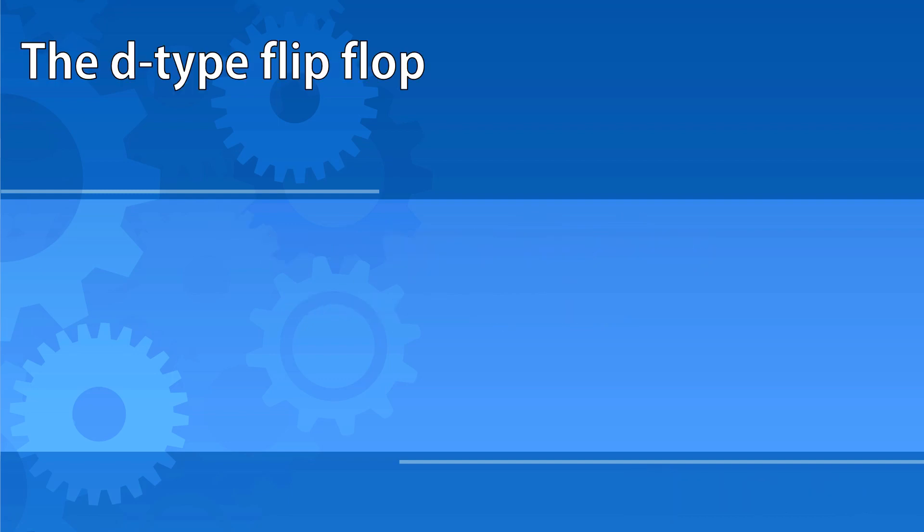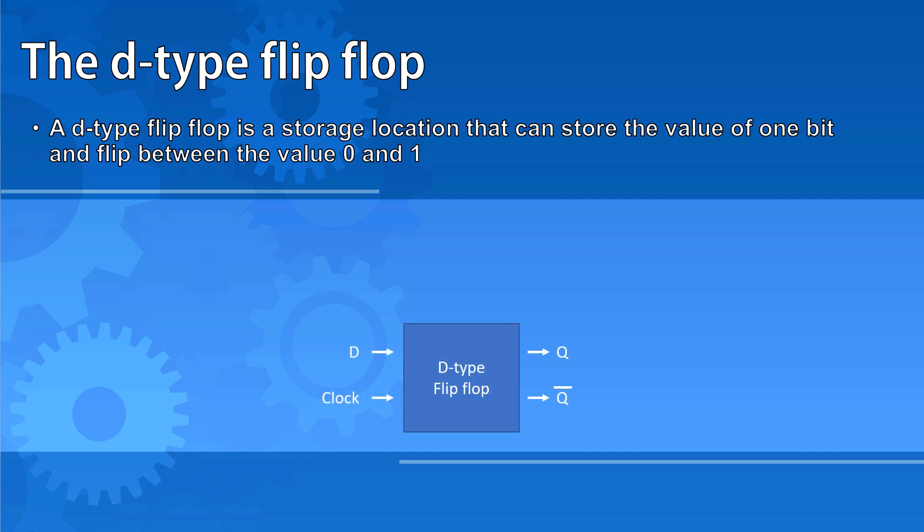A D-type flip-flop is a storage location that can store the value of one bit and flip between the value of 0 and 1. D-type flip-flops are combined together to create RAM and register memory.